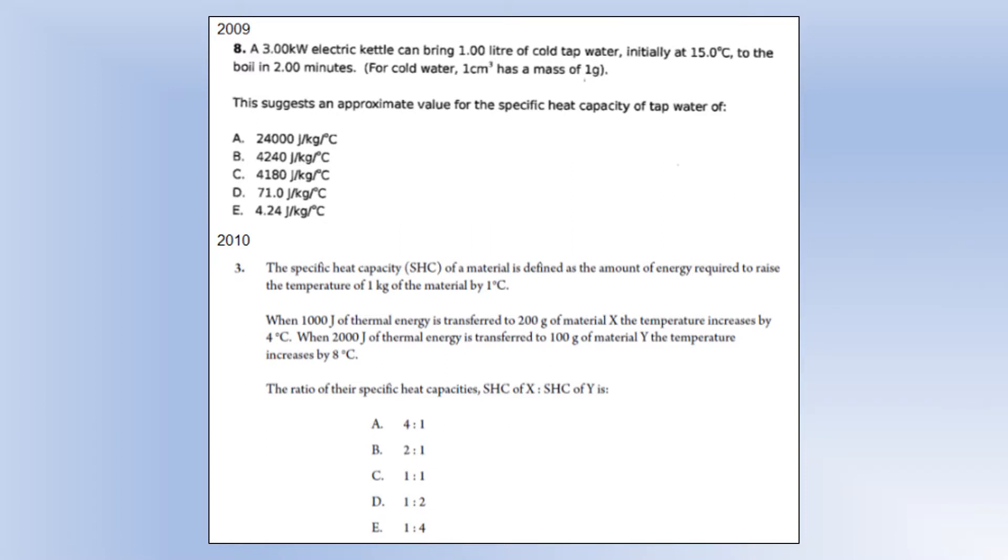A 3 kilowatt kettle can bring 1 litre of cold tap water, initially at 15 degrees Celsius, to the boil in 2 minutes. This suggests the approximate value for specific heat capacity of tap water of... I'm going to use the fact that 1 litre of water is 1 kilogram. So, we know the mass is 1. We're going to use similar principles to what we used before. Q equals PT, and this time Q equals MC delta T. This time we're rearranging to make C the subject. We plug the numbers in. We remember to go from kilowatts to watts. And that gives us our specific heat capacity, which tallies up with option B.